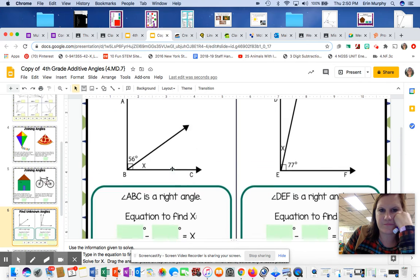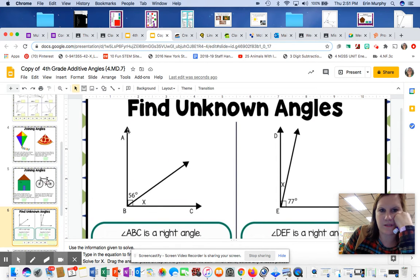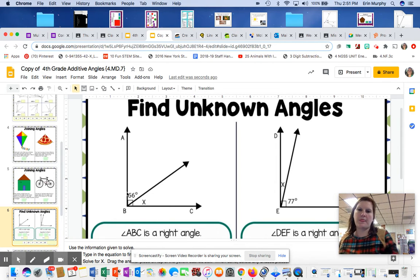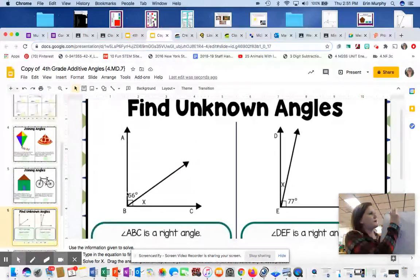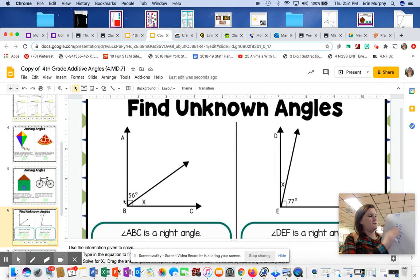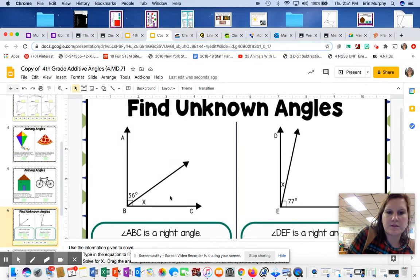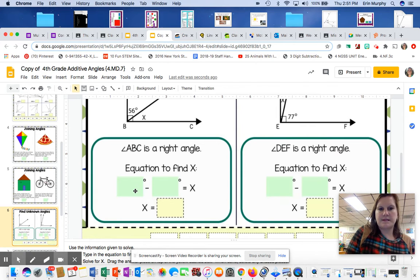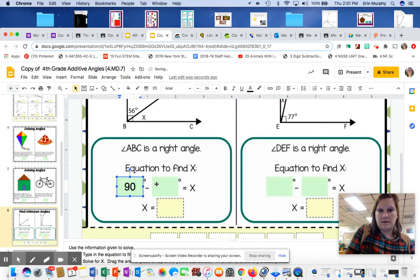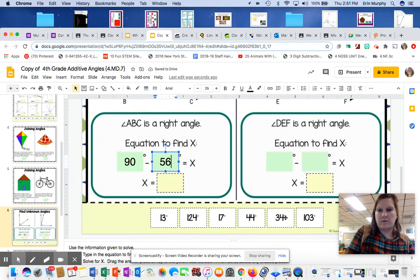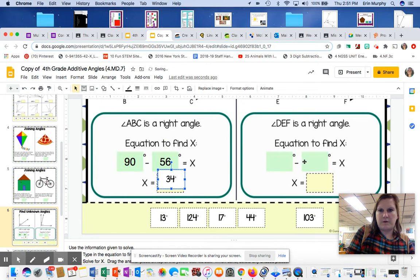Okay, this time, you have to find for the unknown angles. So I have a right angle. Remember, a right angle is going to measure 90 degrees. I know part of it is 56. I want to know what the rest is. So like we did last week, you're going to subtract. And I'm going to get 34. So it's asking you in these little squares to say what you're doing. I did 90 minus 56. And then X would equal 34. Same thing over here.